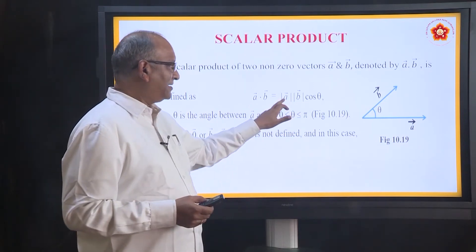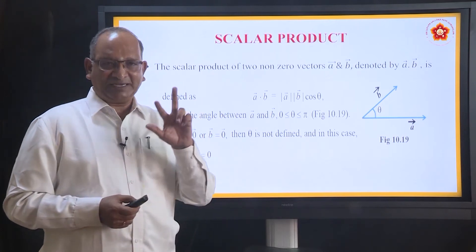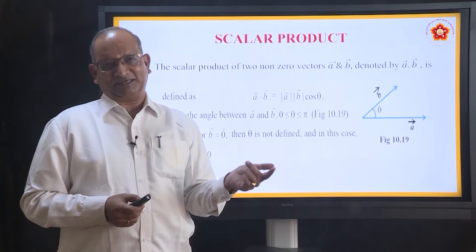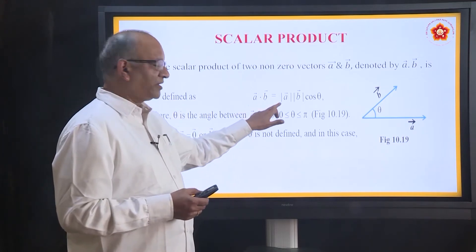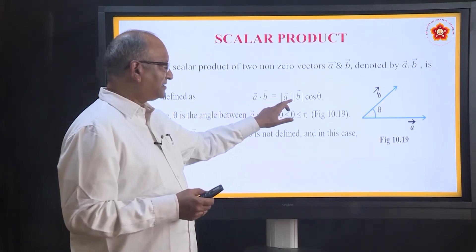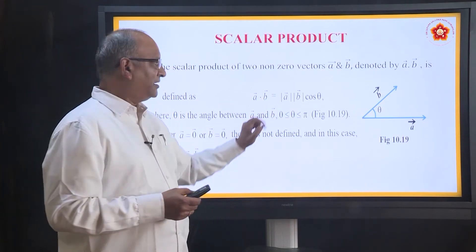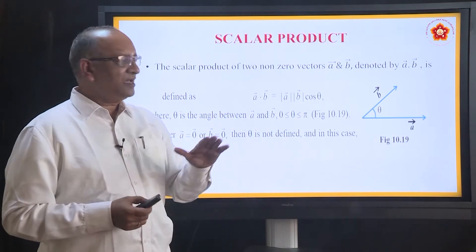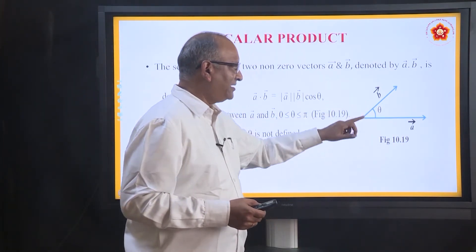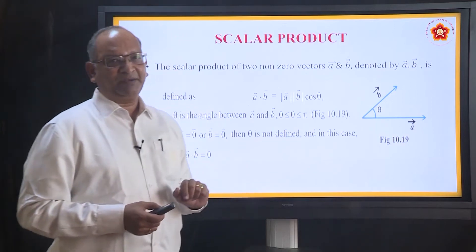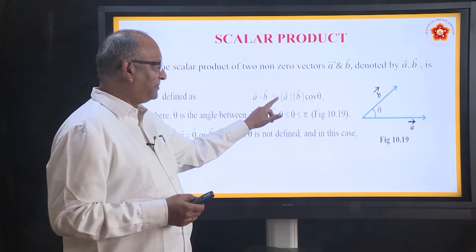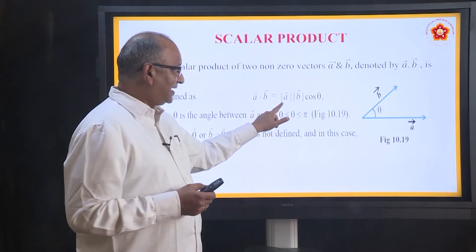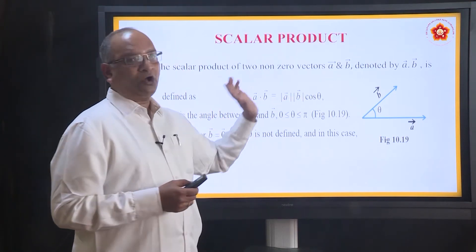What is this A? This is the modulus of A. We know a vector has got two things: one is the magnitude, another is the direction. So we are talking about magnitude of the vector. Similarly, this is the magnitude of the second vector into cos theta. What is theta? Theta is the angle between the vectors. So here is one vector, here is another vector.